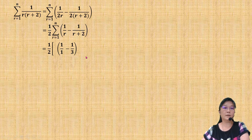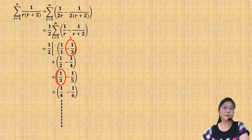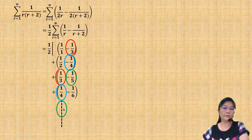When I list the terms vertically — when r equals 1, when r equals 2, when r equals 3, when r equals 4, and so on — I can very easily identify which term cancels off with which term. For example, negative 1 over 3 cancels with positive 1 over 3. Negative 1 over 4 cancels with positive 1 over 4. Negative 1 over 5 cancels with positive 1 over 5. Negative 1 over 6 cancels with positive 1 over 6, and so on.